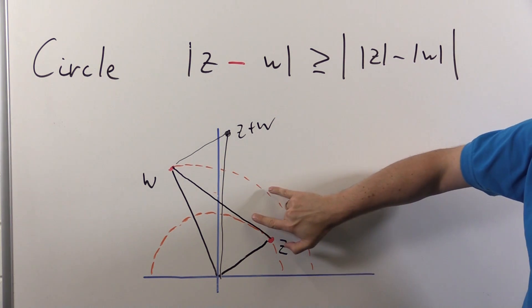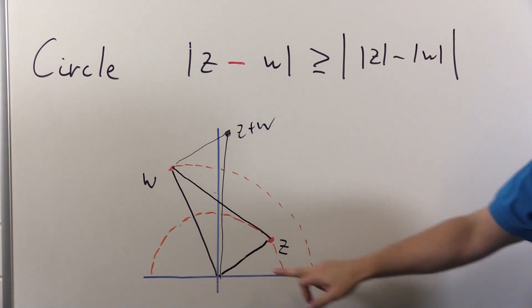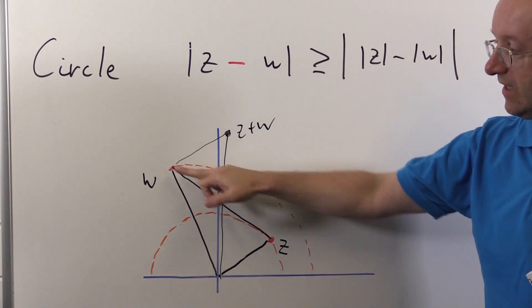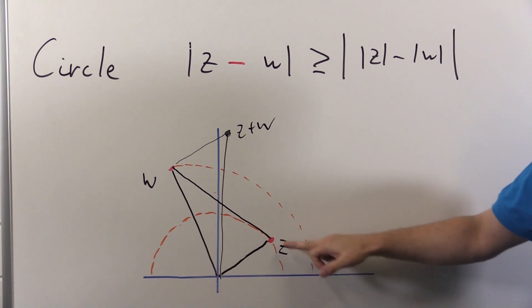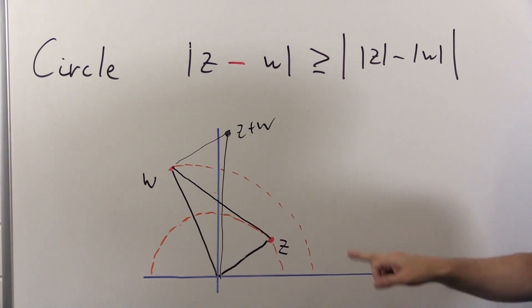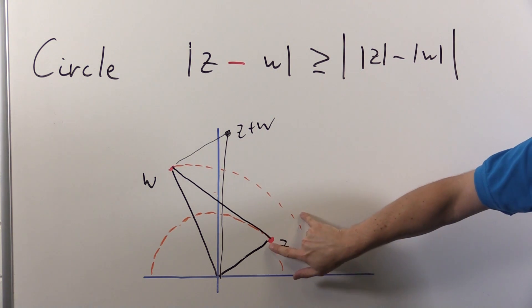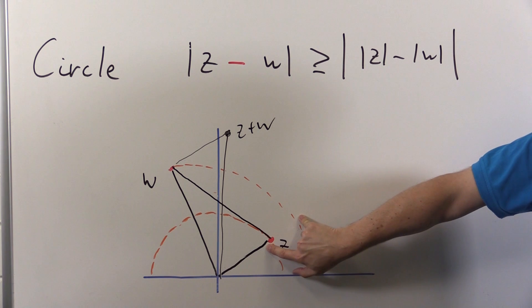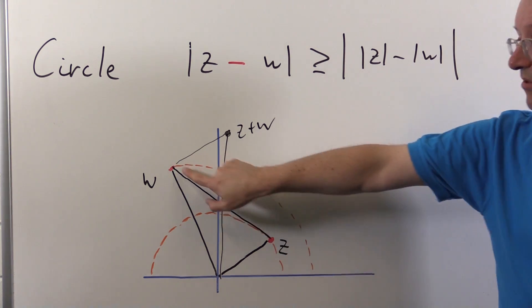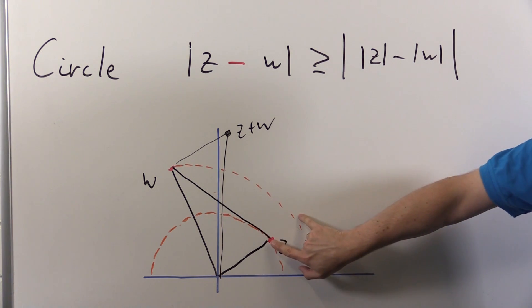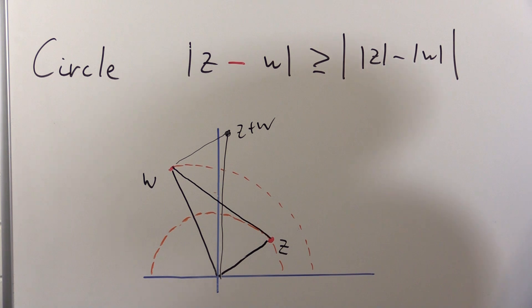Well, that is the difference between the radii of these two circles here. Mod z is that distance, mod w is that distance. So the radius of the inner circle is mod z, radius of the outer circle, mod w, and mod of z minus w is the distance between the two circles. So this is saying z and w can't be any closer than the distance between, the difference between the radii of those two circles.